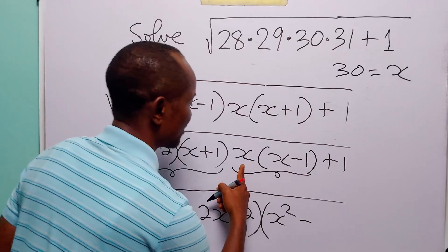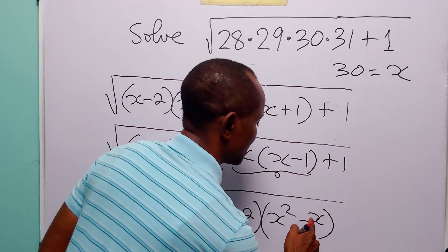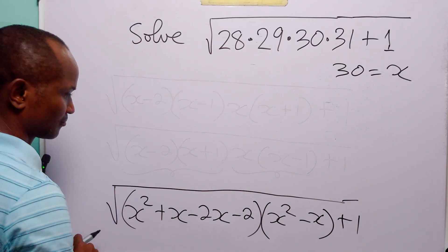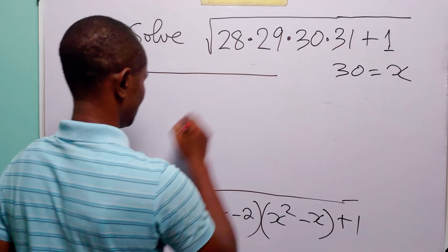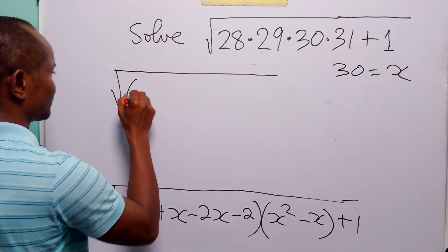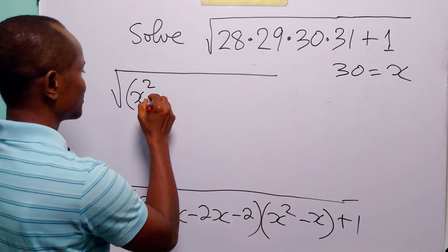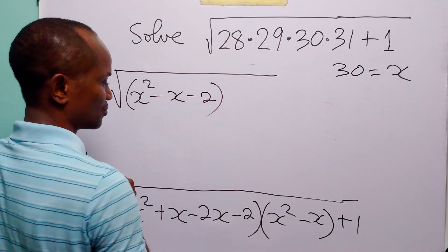Now when we multiply this two we have x squared. That is this and this. And then we have x times minus 1 is minus x. Then of course we still have plus 1. Now from here we have x squared plus x minus 2x is going to give us minus x. And then we have minus 2.